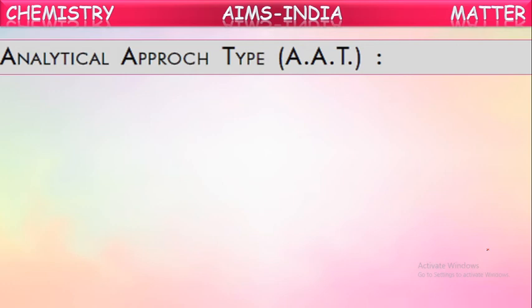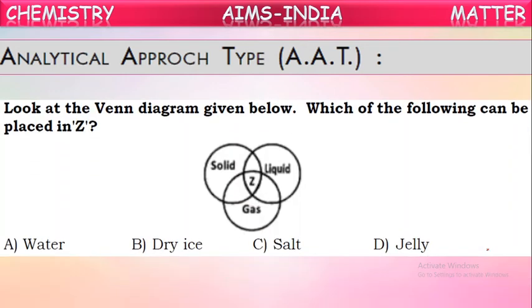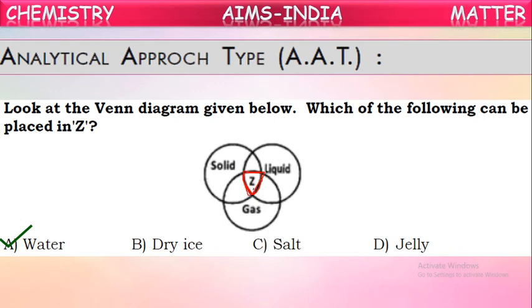Analytical approach question: Look at the Venn diagram. Each circle represents one state of matter — solid, liquid, and gas. The region marked Z is common to all three circles. The substance placed at Z should exist in all three states at normal conditions. The answer is water — water can exist as ice (solid), liquid water, and water vapor at normal temperatures and conditions.